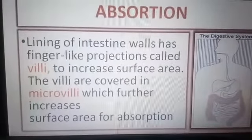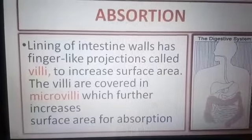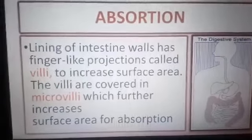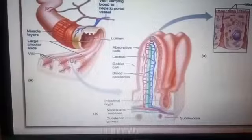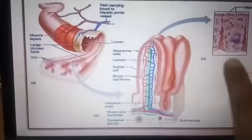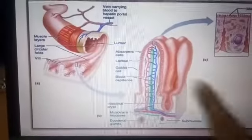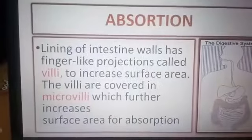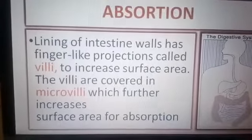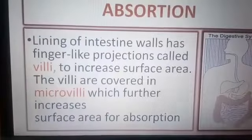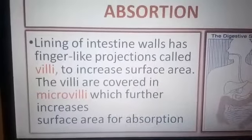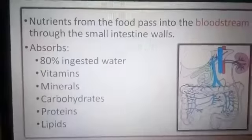The lining of the intestine wall has finger-like projections called villi. Here you can see villi. Villi help to increase the surface area. The villi are covered by micro-villi, which further increases the surface area for absorption of food.